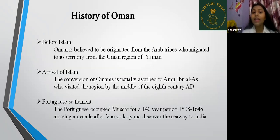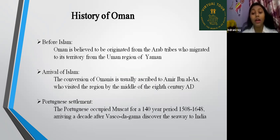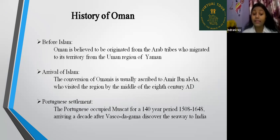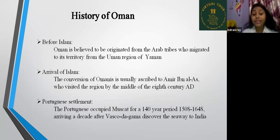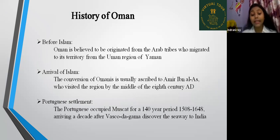Now, the history of Oman. Oman is a historic place, so we must not skip its history. Before Islam, Oman is believed to have originated from Arab tribes who migrated from the Uman region of Yemen. With the arrival of Islam, the conversion of Omanis is usually ascribed to Amir ibn al-As, who visited the region by the middle of the 8th century AD. During the Portuguese settlement, the Portuguese occupied Muscat for a 140-year period from 1508 to 1648, arriving a decade after Vasco da Gama discovered the seaway to India.